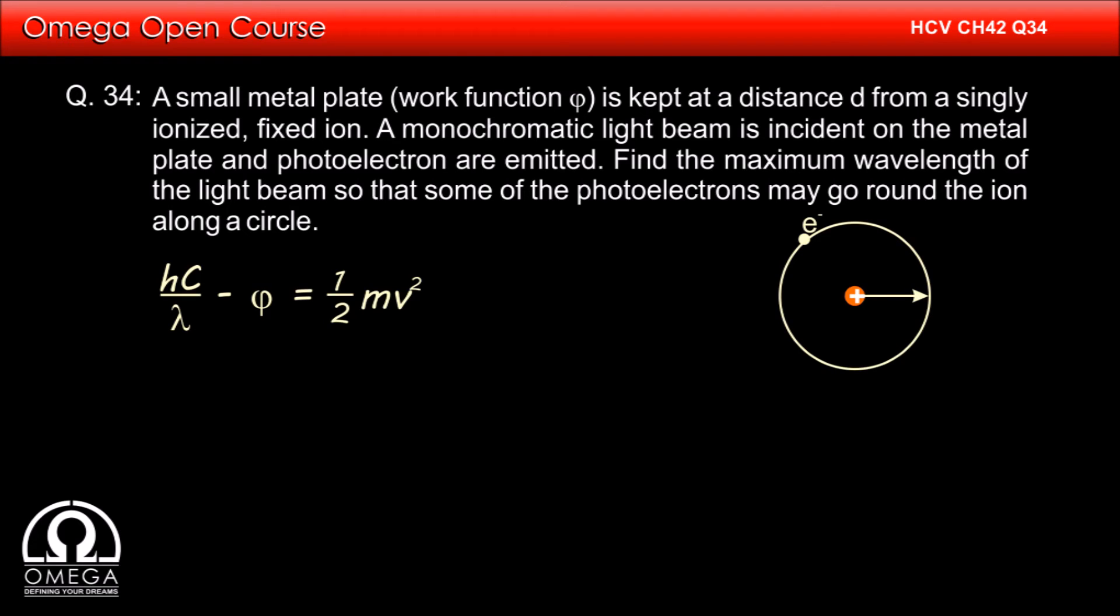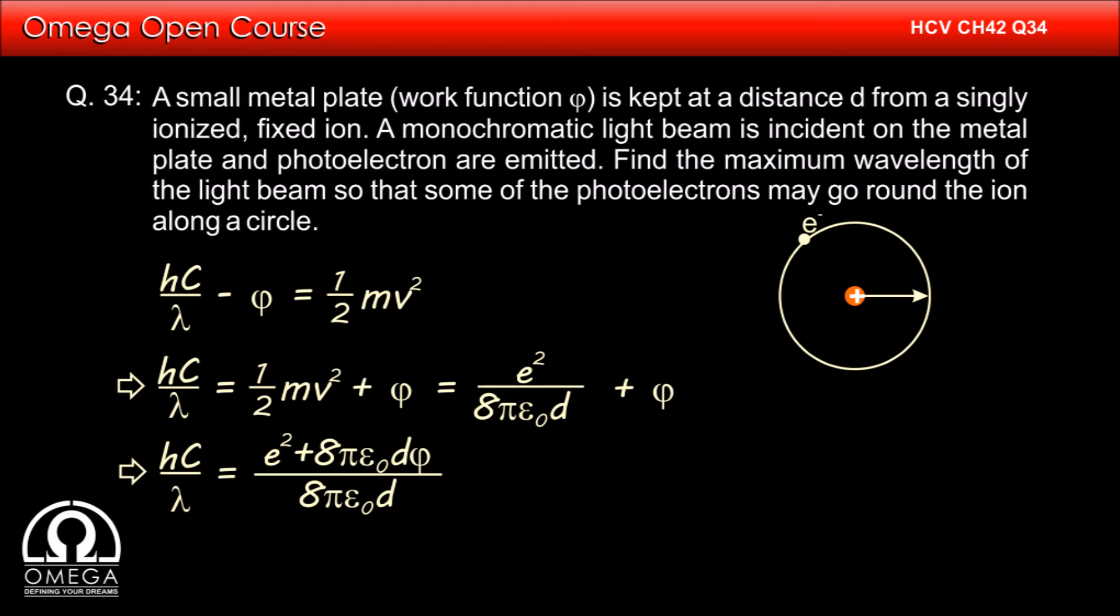Therefore, hc by lambda minus phi is equal to half mv square, which implies hc by lambda is equal to half mv square plus phi. Putting the value of half mv square, we get hc by lambda is equal to e square divided by 8 pi epsilon not d plus phi.